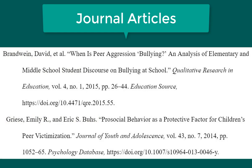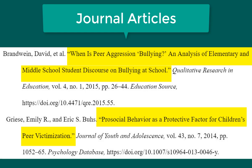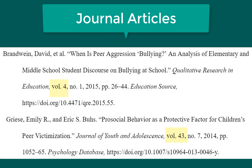After the author is the title of the article in quotation marks and a period. This is written in title case, which means all major words are capitalized. Then the journal title is written in italics, comma, volume number abbreviated 'vol.' period, comma, the issue number abbreviated 'no.' period, comma, the year of publication, comma, and then the page numbers of the article, period. The page range of the article follows the abbreviated 'pp.' which stands for pages plural.